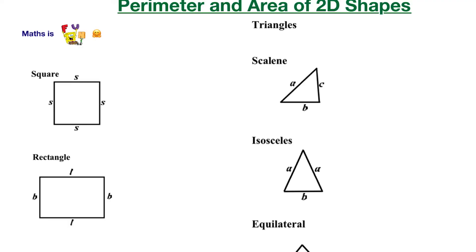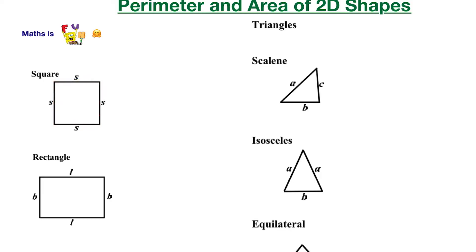Let's look at this shape. This shape is a square. Why is it a square? It has all sides equal — this side, this side, this side, and this side are all equal. Let's look at the area. The area is equal to side times side. So this side is called side and this side is called side, so it's side times side, or you can say side squared.